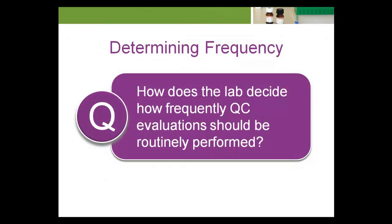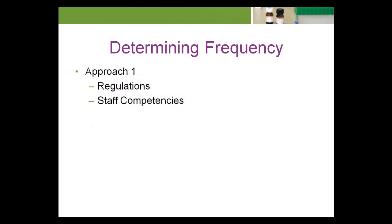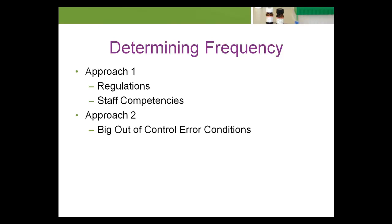How does the lab decide how frequently QC evaluation should be routinely performed? During these intervals, if a test system malfunctions, it is not associated with any notable event. Therefore, the laboratory needs to schedule QC evaluations in such a way as to minimize the risk of too many patient results being produced and reported before the laboratory becomes aware of the system malfunction. All too often, lab managers only look at what the regulations dictate and their staff competencies when scheduling QC evaluations. For the high-performing laboratory, a place to start is to consider really big out-of-control error conditions.